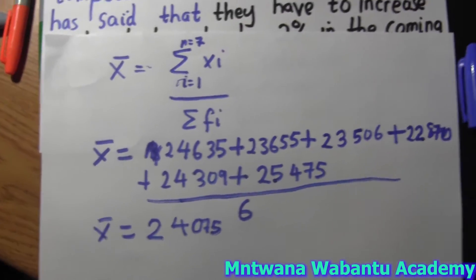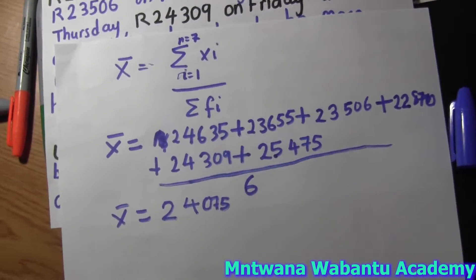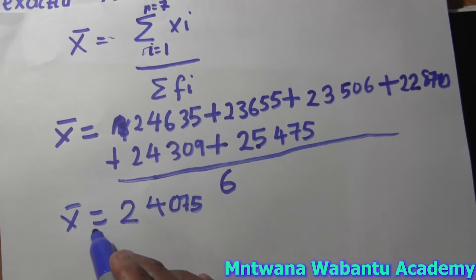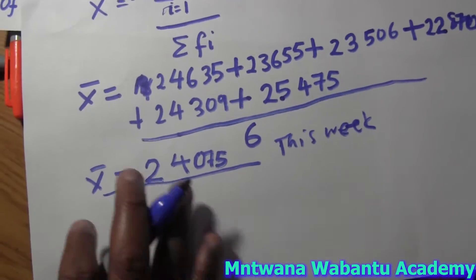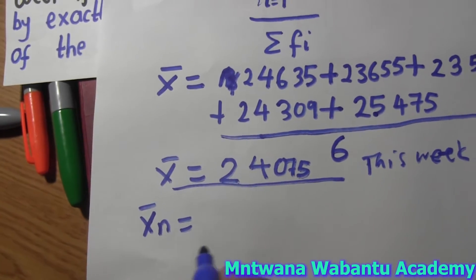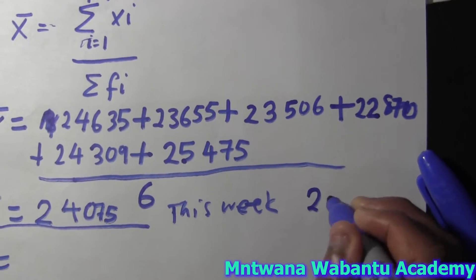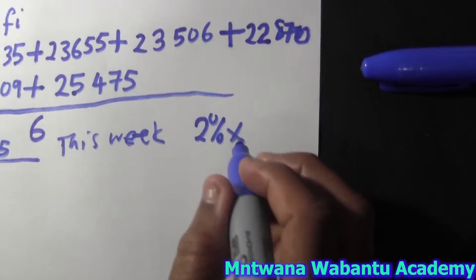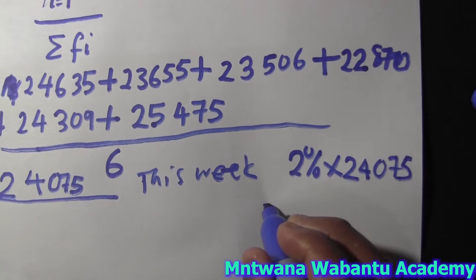So this is the mean of this week — there is no increase percentage yet applied. Now I'm going to calculate the increase percent. This is the mean of this week, but for next week it's going to be increased by 2%. So let me call this mean next week. First, let me find 2% of this amount, which is 2407.5. So 2% of 2407.5.